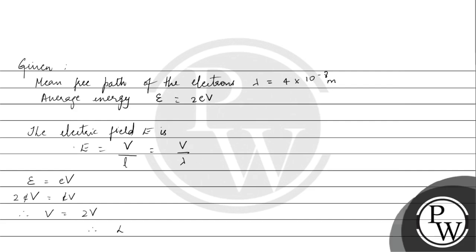So therefore the electric field is 2 divided by 4 into 10 to the power of minus 8. So therefore we will get the value of E as 0.5 into 10 to the power of 8 volt per meter.